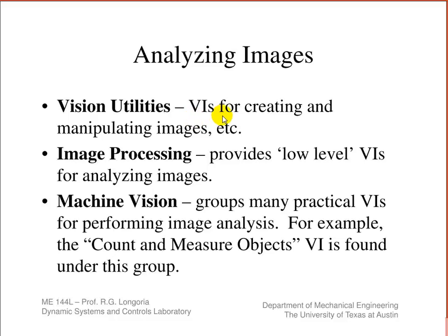The vision utilities are used for creating and manipulating images. The image processing palette has low-level VIs where you can do pixel manipulation and those kinds of things. Machine vision introduces higher-level processing of images, and one particularly useful VI is called Count and Measure Objects.